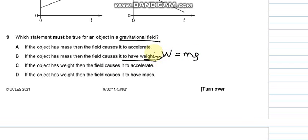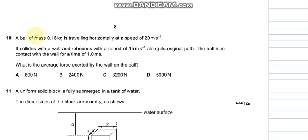Question number 10 says a ball of mass 0.16 kg is traveling horizontally at a speed of 20 meters per second. It collides and rebounds with speed 15 meters per second. The ball is in contact time of one millisecond. What is the average force exerted by the ball on the wall?